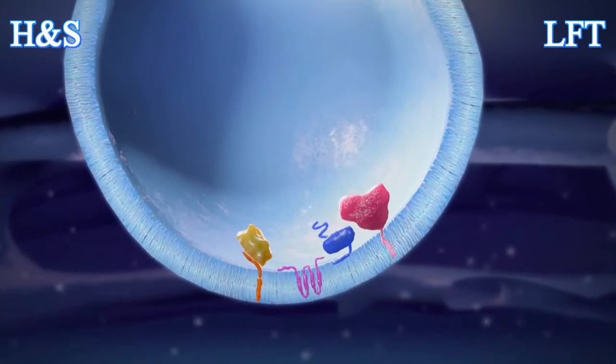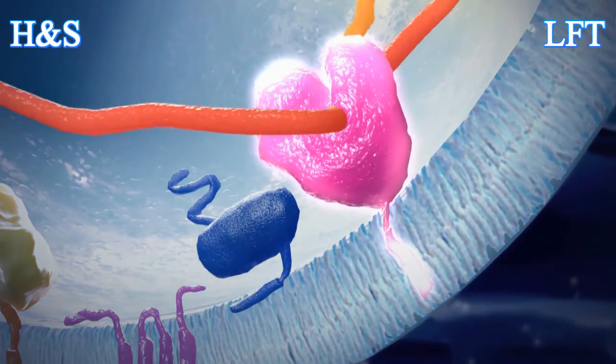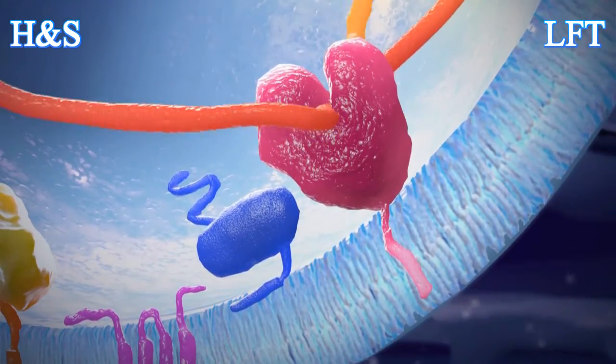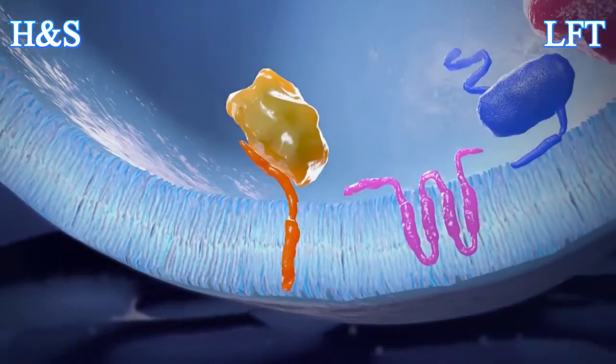Each viral protein contributes to the replication of the viral genome, with NS5B, the viral RNA polymerase, playing the key role. NS3 and NS4A have helicase activity.